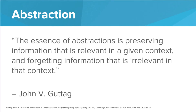I think John Guttag, who's a computer science professor at MIT, said it best. He said: the essence of abstraction is preserving information that is relevant in a given context and forgetting information that is irrelevant in that context. That is perfect. If it's not relevant for this context we don't need to worry about it. We only care that the Warriors won by 10 points, or we only care that Karel needs to move and turn left. We don't worry about all the low level things going on.